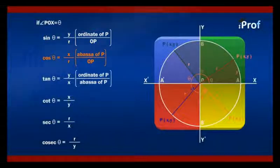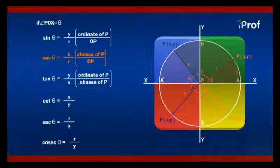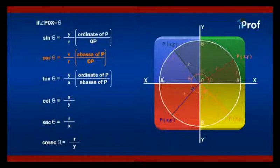Cos theta will be equal to x upon r. x upon r means abscissa of P divided by the radius of the circle.